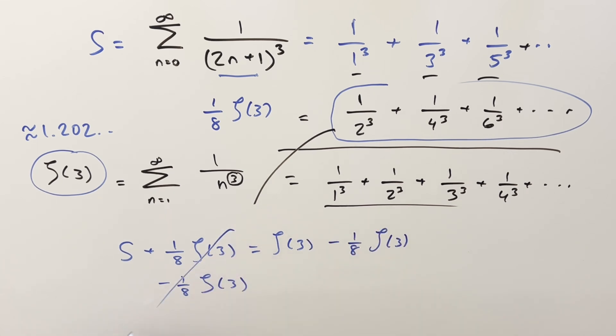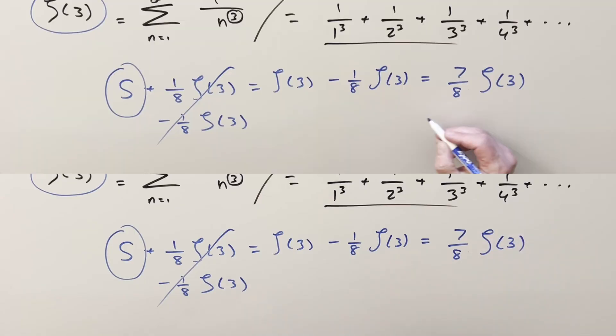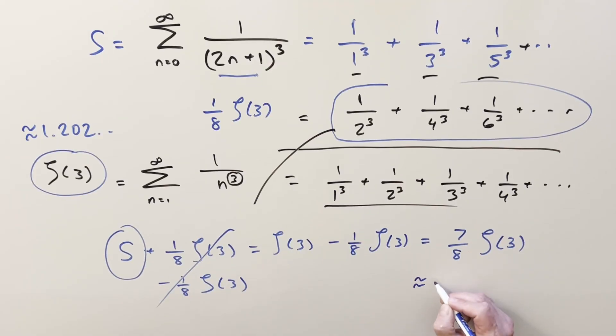Subtracting on both sides, we isolate S. The final solution is (7/8)ζ(3). As a decimal approximation, this is approximately 1.0518.